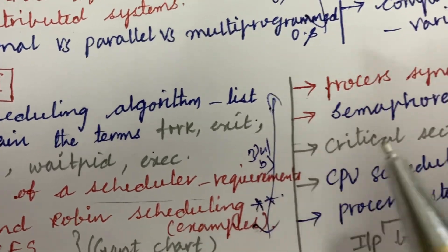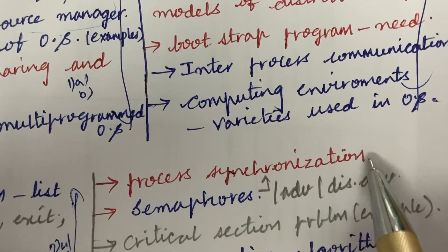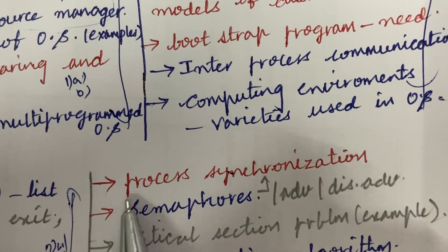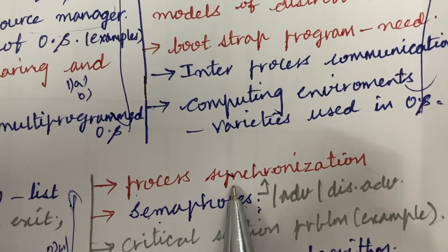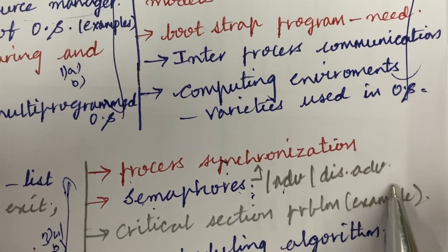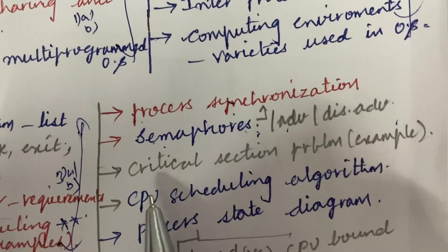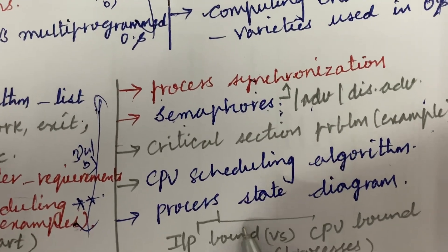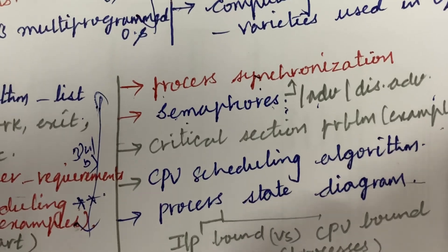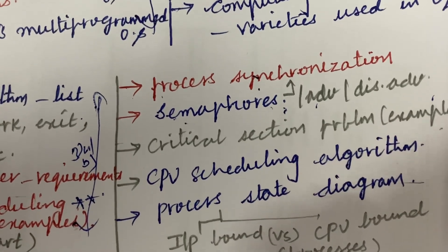Define the process synchronization and semaphores is also one of the very important questions. Process synchronization and its advantages and disadvantages, and critical section problem and the example, and CPU scheduling algorithm as well as process state diagram and the differences between I/O bound process and CPU bound process.